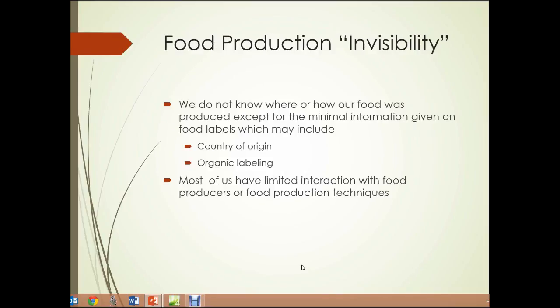Also, food production away from the areas where food is consumed results in food production invisibility. We don't know where or how our food was produced, except for the minimal information given on food labels, which may include the country of origin and organic labeling. If a particular food product is not labeled as organic, we have no idea what system was used to produce it, and most of us have limited interaction with food producers or food production techniques.